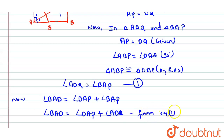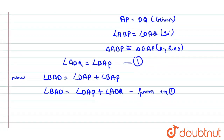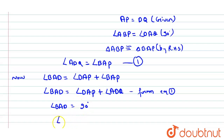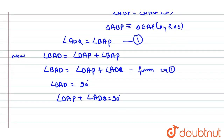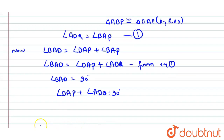We know that angle BAD is 90 degrees because all angles of the square are 90 degrees. Therefore, angle DAP plus angle ABQ equals 90 degrees.